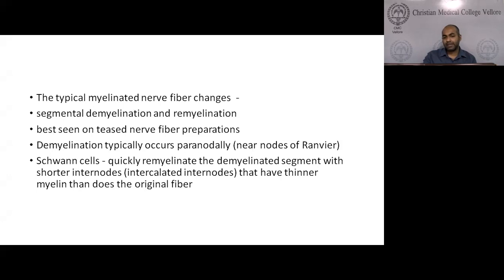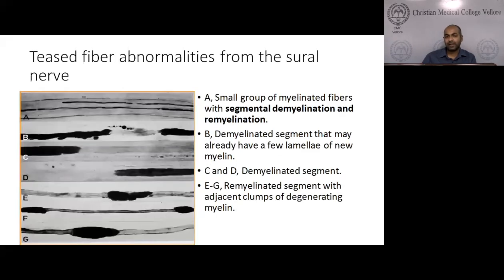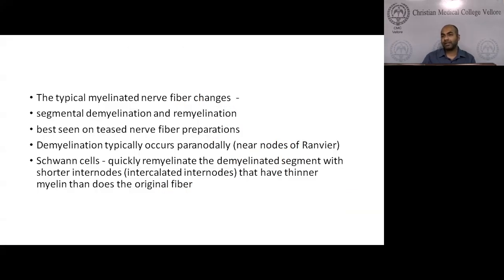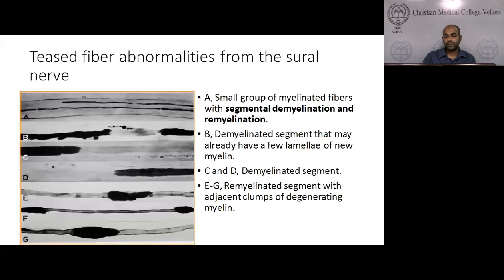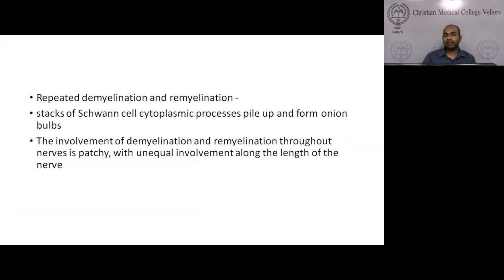The typical pathological changes are segmental demyelination and remyelination, best seen on teased fiber preparation. There is a teased fiber progression with segmental demyelination and remyelination. This demyelination occurs paranodally, near the nodes of Ranvier. Remyelination is done by Schwann cells, which quickly remyelinate the segment with shorter internodes and thinner myelin than the original fiber. Repeated demyelination and remyelination causes stacks of Schwann cell cytoplasmic processes to pile up, forming what we know as onion bulbs. The involvement is patchy with unequal distribution along the length of the nerve.